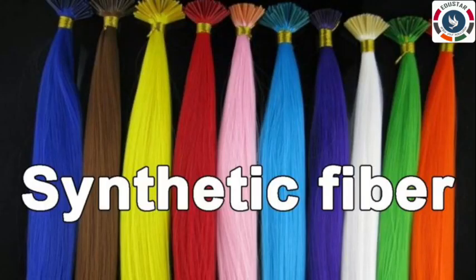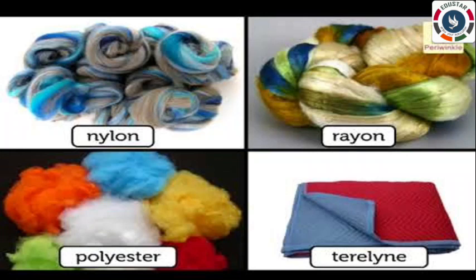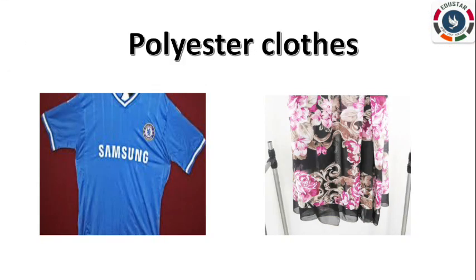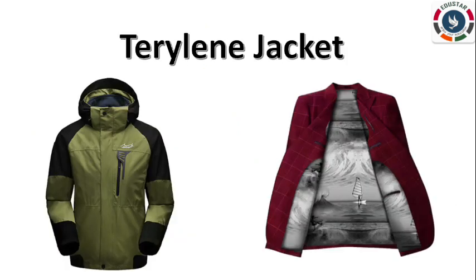Next, synthetic fiber or man-made fiber. Fibers that are not found in nature but are made by human beings are called synthetic or man-made fibers. Nylon, polyester, terylene and rayon are some examples of synthetic fibers. Synthetic fibers are strong and they last long. Their color does not fade. They can be stretched easily and are waterproof and wrinkle-free.